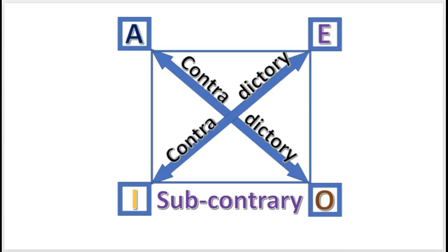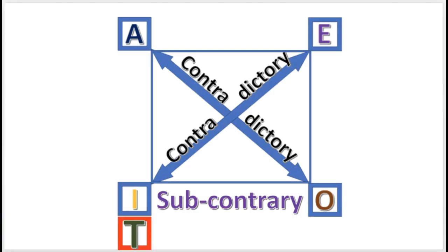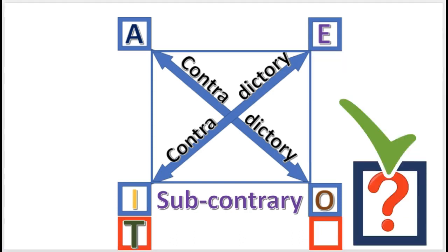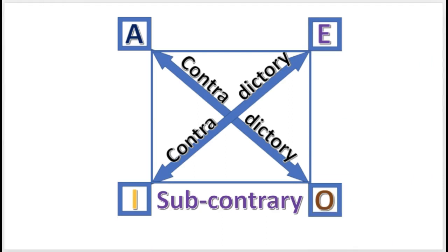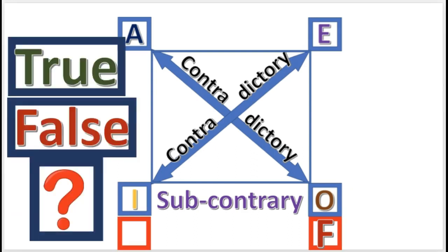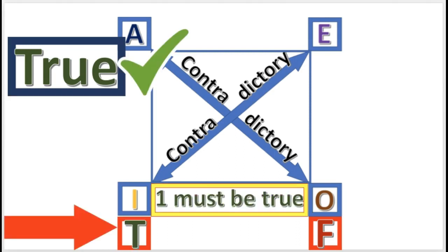And likewise, if O is true, then the I has undetermined truth value. Pop quiz: If I is true, what is O? The answer is: Undetermined truth value. Next practice problem: If O is false, what is I? The answer is: I is true. One must be true.